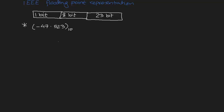Hello everyone. Today we'll be looking into the conversion of IEEE floating point representation — how a decimal and a hexadecimal value can be converted and represented by IEEE floating point representation. Most computers nowadays conform to this standard. In a 32-bit MIPS architecture, you have one bit for the sign, 8 bits for the exponent, and the remaining 23 bits represent the mantissa digits.